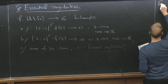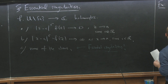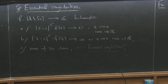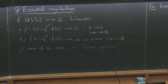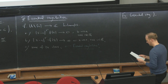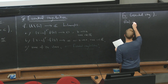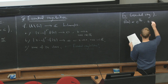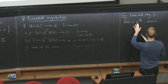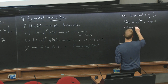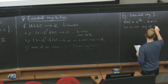The definition of an essential singularity: it is an isolated singularity which is not a pole and not a removable singularity. So it collects all the remaining possibilities. The typical example is f(z) = e^{1/z}. This function is holomorphic on ℂ when z ≠ 0, and the problem is what happens when z = 0. The claim — not surprisingly — is that it has an essential singularity at z = 0.